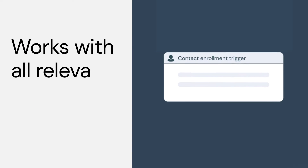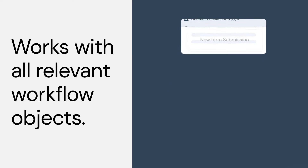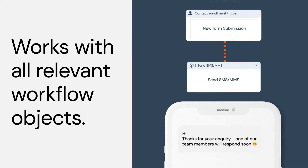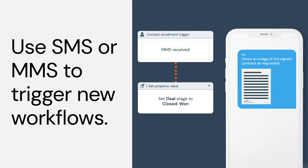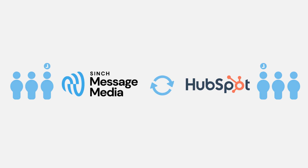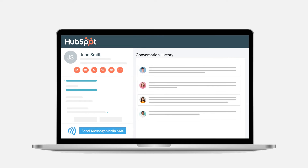Want to add SMS or MMS triggers to your workflows? SMS for HubSpot is compatible with all the workflow objects you're already using. And you can even trigger new workflows from inbound SMS and MMS messages. Two-way data synchronization means your customer records are always up-to-date, even when you're offline. And conversation history on customer records keeps you on top of who's saying what and when.